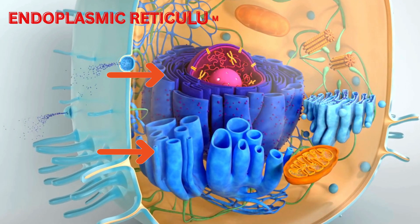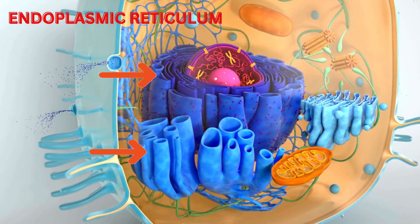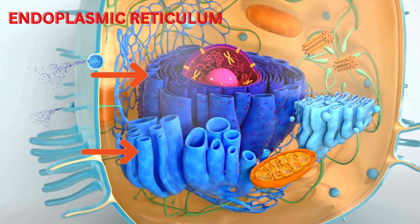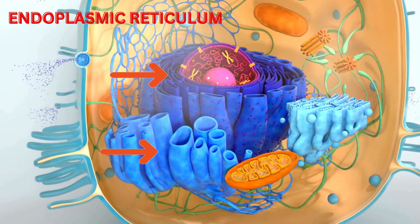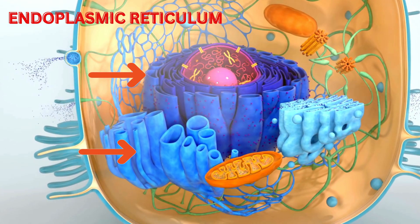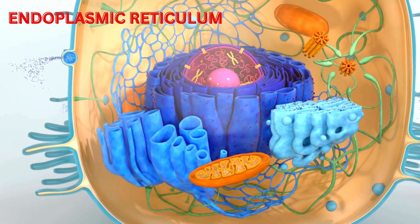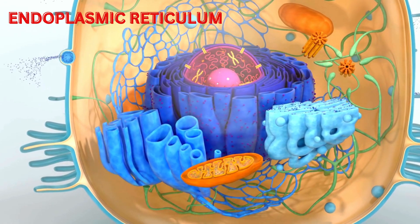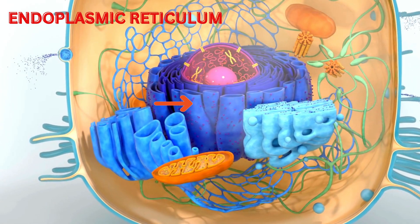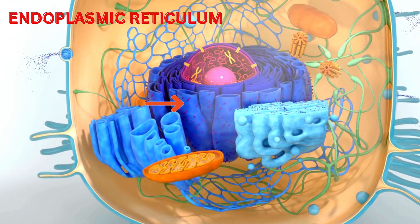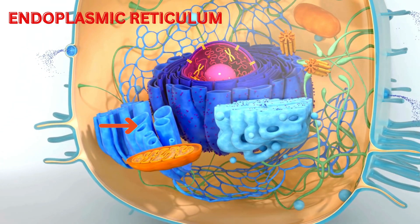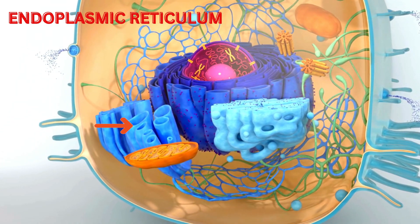Endoplasmic Reticulum (ER) Function. The endoplasmic reticulum is a network of membranes involved in protein and lipid synthesis, folding, and transport. There are two types: rough ER, which has ribosomes attached and synthesizes proteins, and smooth ER, which synthesizes lipids and detoxifies substances.